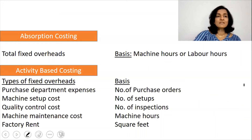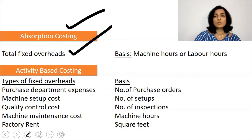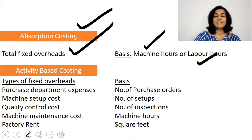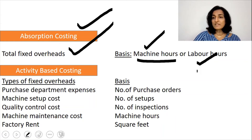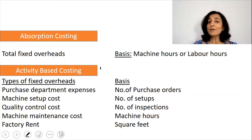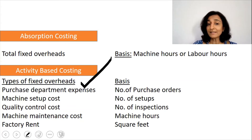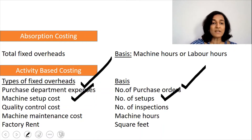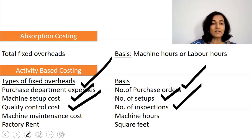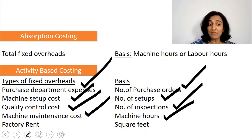Under absorption costing, all fixed overheads are divided between the two products based on machine hours or labor hours — machine hours if machines are used, labor hours if laborers are used. Under activity-based costing, the basis differs by overhead type: purchase department expenses use number of purchase orders; machine setup cost uses number of setups; quality control or inspection cost uses number of inspections; machine maintenance cost uses machine hours; and factory rent uses square feet.